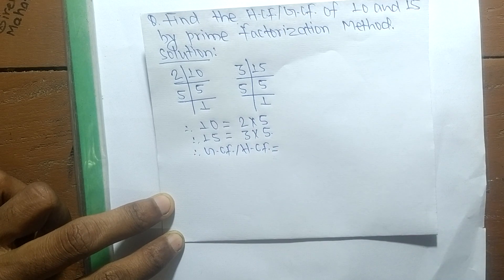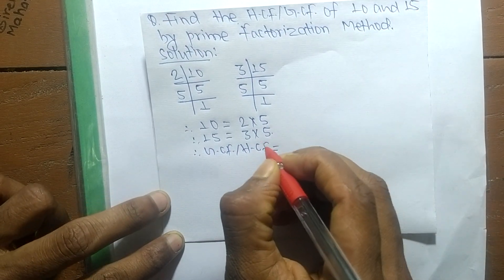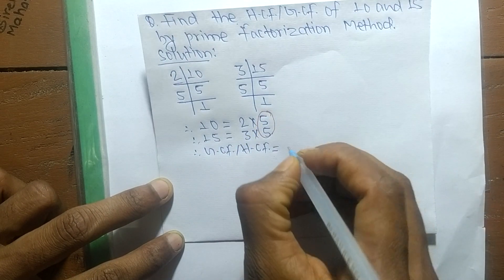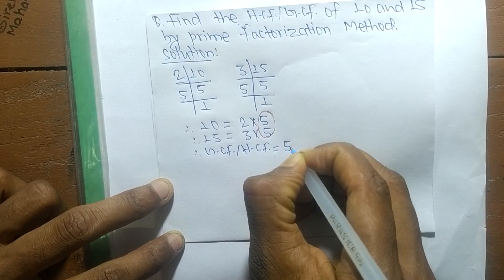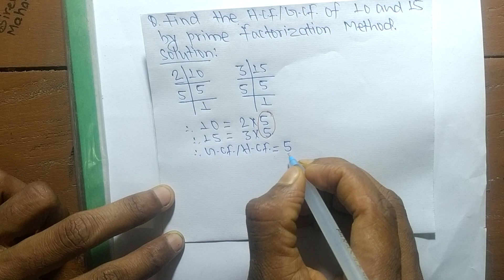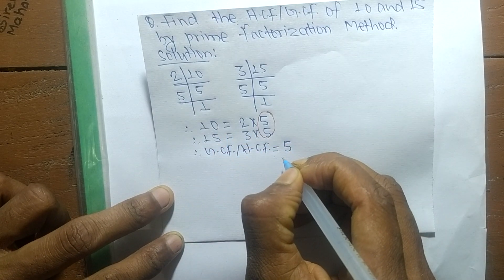We need to determine the common elements in both factorizations. The common factor here is 5, so the GCF or HCF is equal to 5. Therefore, the GCF or HCF of 10 and 15 is 5.